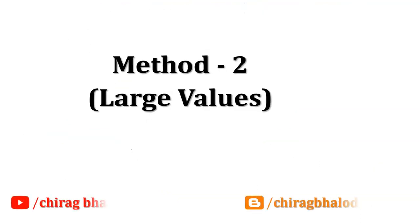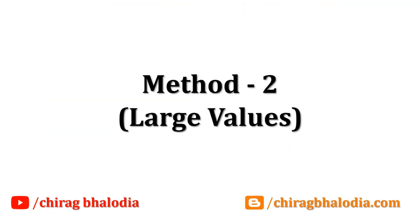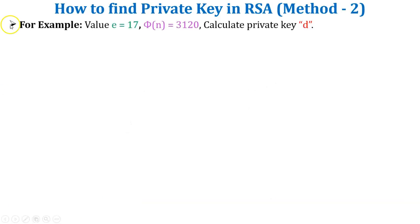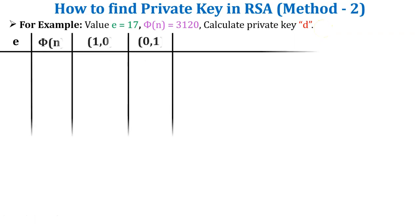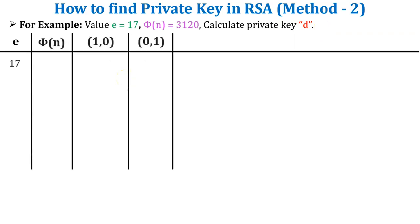Let's discuss method 2. Method 2 is used for large values of public key e and phi of n. Let's take one example: e = 17, phi of n = 3120. Calculate private key d. In this method I will calculate value d using the extended Euclidean algorithm. So initial values are e = 17 and phi of n = 3120.